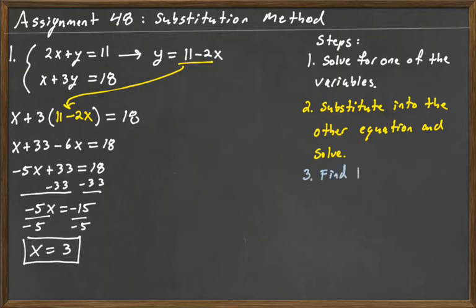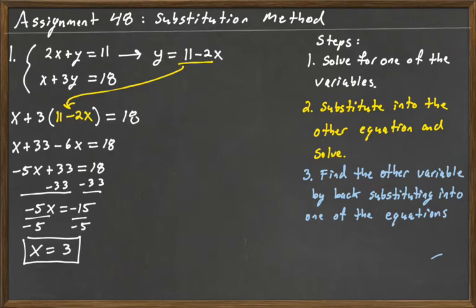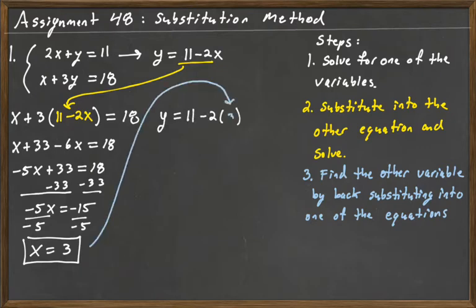Step three: find the other variable by back substituting into one of the equations. We're going to plug in x equals 3 into one of our equations — one of the originals, 2x plus y equals 11, or x plus 3y equals 18, or the version we solved for y: y equals 11 minus 2x. That's going to be the easiest one to use. So y equals 11 minus 2 times 3, which gives y equals 11 minus 6, so y is equal to 5.